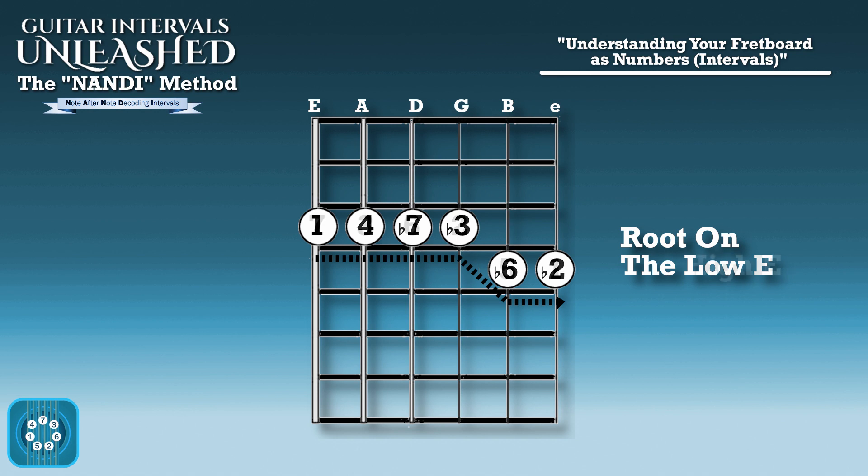Similarly, if the root was on the high E string, we would have to start here on the 7. Go 7, 3, 6, 2 — all on the same fret. Then make a half step adjustment from our G to B string to get to our 5 and 1: 7, 3, 6, 2, 5, 1.